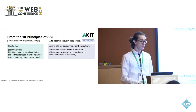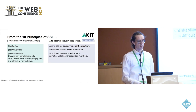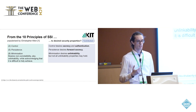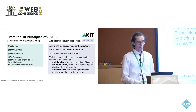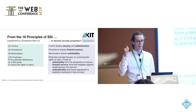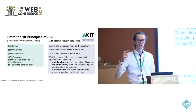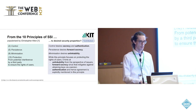Another principle is persistence: identities must be long-lived, which for us means it desires forward secrecy. Minimization desires non-correlatability, that is, unlinkability — though they acknowledge this is really hard to achieve. Finally, protection from potential interference by a third party to ensure the rights of the user hints at unlinkability, forward secrecy, and authentication. Agreement is actually mentioned explicitly in this principle.